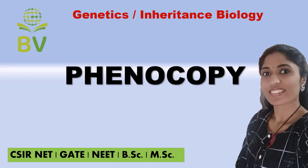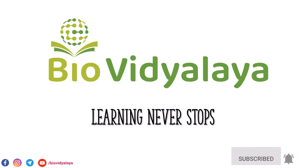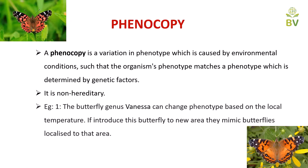So let's get started. What is meant by phenocopy? We already studied about phenotype. Phenotype means observable character or appearing character. The meaning of 'pheno' is appearing or showing, and 'copy' means similar or identical to another. So phenocopy means a character that appears similar to another.